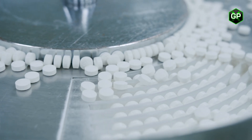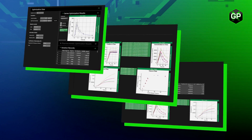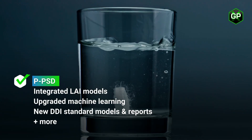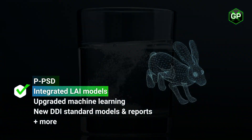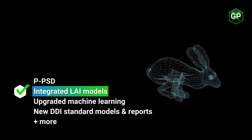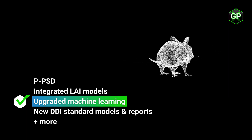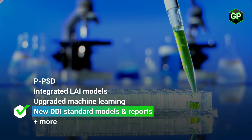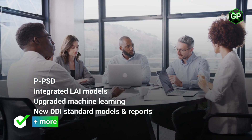GPx.2 also incorporates numerous enhancements and extensions, including PPSD to bridge the gap between in vitro dissolution and in vivo drug performance. Integrated LAI models for improved IV-IVCs and translation across species. Upgraded machine learning models to inform PVPK models across all species. New DDI standards models and reports to streamline regulatory assessments. And more.